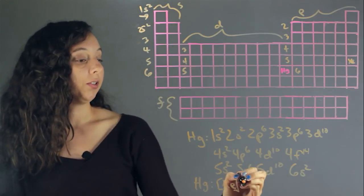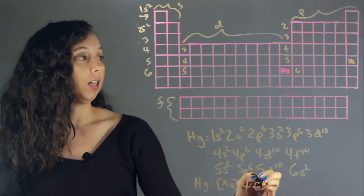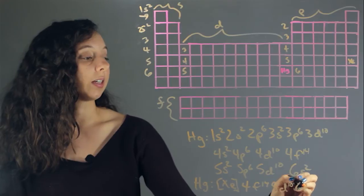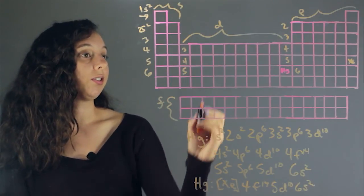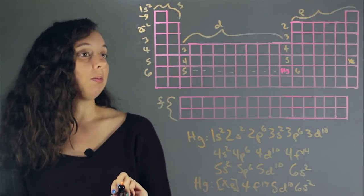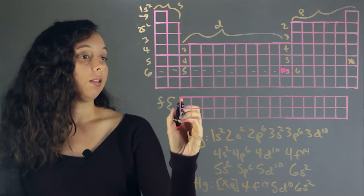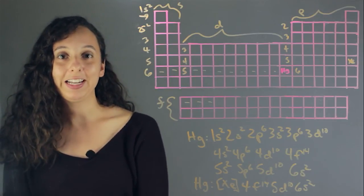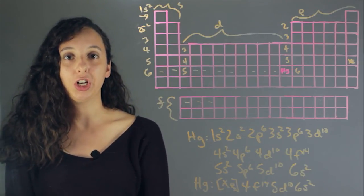And everything that's after that is 4f14, 5d10, and 6s2. So just this row, that's the d block, this is the 6s, and this first f block. All right, I'm Robin Higgins, and that is the electron configuration of mercury.